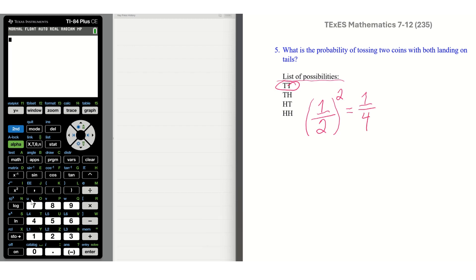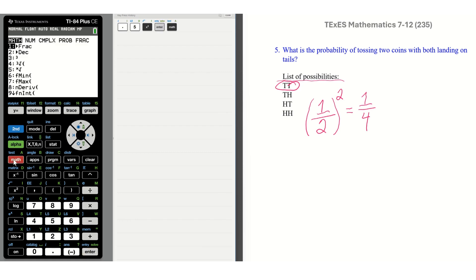We can also see that on our calculator. We could just say point five squared. And that gives us one-fourth. We need to push math, and one is for fractions to convert it to a fraction, which is what we need. Then we push enter to get out and enter to get our final answer.